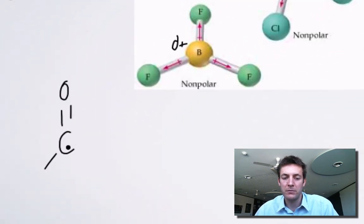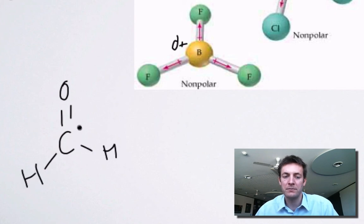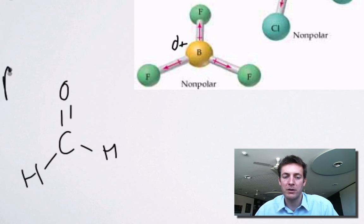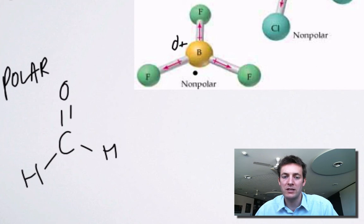If we take a trigonal planar molecule with different atoms around the outside — for example methanal — it's trigonal planar because there are three sets of bonding pairs around the central atom, but with different atoms around the outside the polar bonds won't cancel out, and this molecule will be polar. So for trigonal planar molecules it depends on what atoms you've got: symmetry leads to non-polarity, while asymmetry leads to a polar molecule.